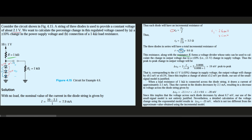These ratios can be used to calculate the change in output voltage due to the plus/minus 1 volt change in supply voltage. Using voltage division, we redraw the circuit: a 10 ± 1 V supply, a 1 kilohm series resistor, and the three diodes to ground. Rewriting this section, we can see it clearly resembles a voltage divider.